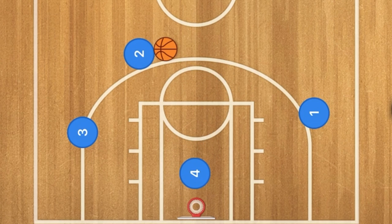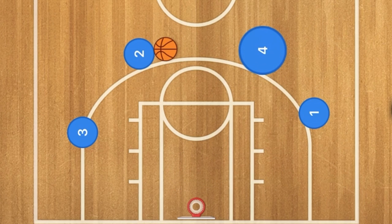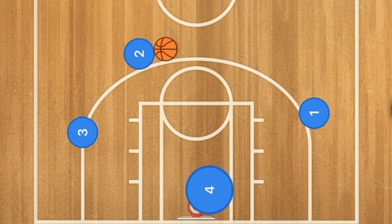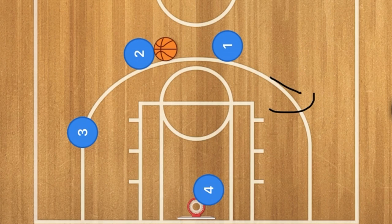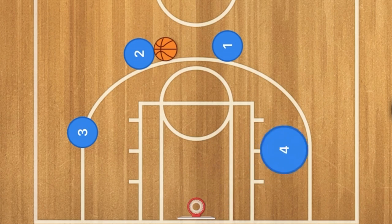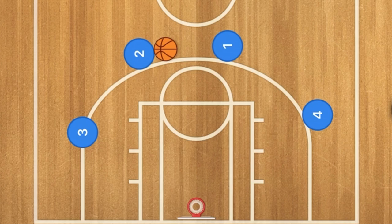This is where it gets a little different: instead of player 4 just popping back out to the 3-point line, player 1 is going to fill his spot because he's on the opposite side of the ball, and then player 4 will fill in player 1's spot. I hope you have enjoyed — please like and subscribe, and I will see you guys next time.